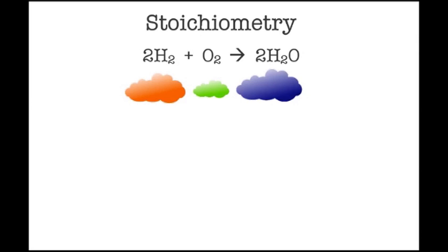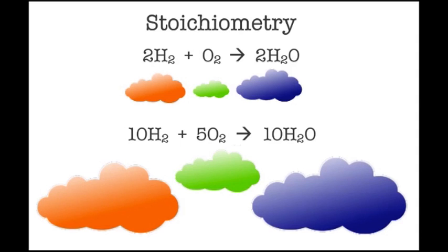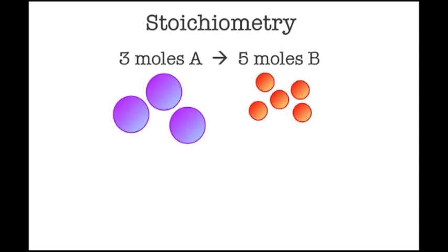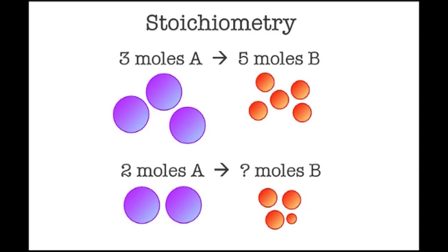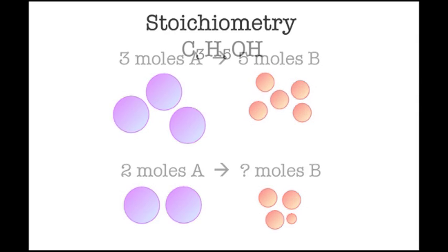Also, if three moles of A reacts to use five moles of B, then less A will produce less B.